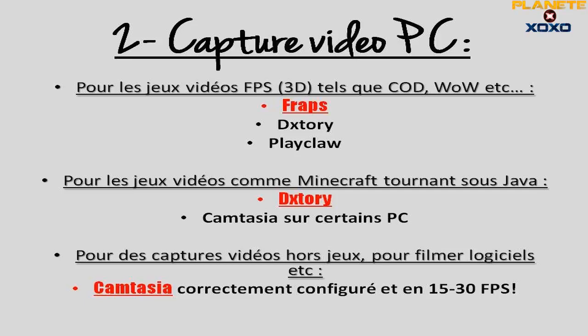Pour capturer hors jeu, le meilleur logiciel à mes yeux c'est Camtasia. C'est vraiment parfait, à part au niveau du son du microphone où je dois parler assez proche pour avoir une qualité correcte. Mais pour la capture vidéo, vous le réglez en 15 ou 30 FPS et vous pourrez filmer en très bonne qualité ce que vous faites sur votre écran. Vous pourrez aussi zoomer, c'est ce que je fais sur mes vidéos.